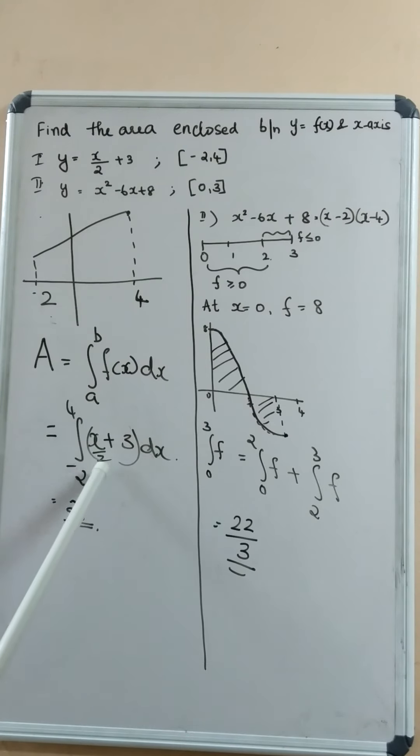After integrating, you will get x square by 4 plus 3x, giving the lower limit and upper limit, we will get the answer as 21. This is a very simple problem.